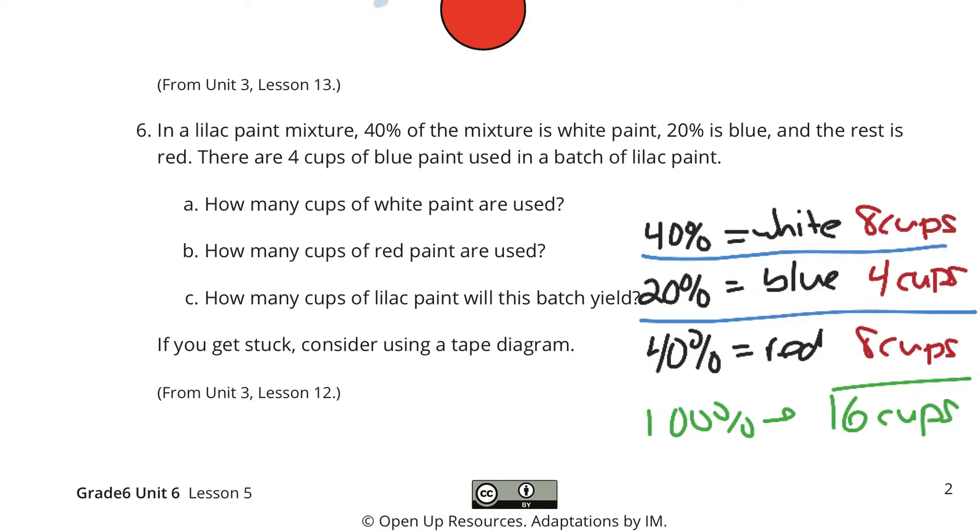To answer the questions, how many cups of white paint are used? Eight cups. Red paint? Eight cups. Lilac paint? 16.